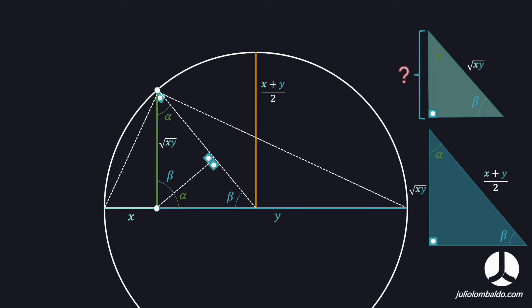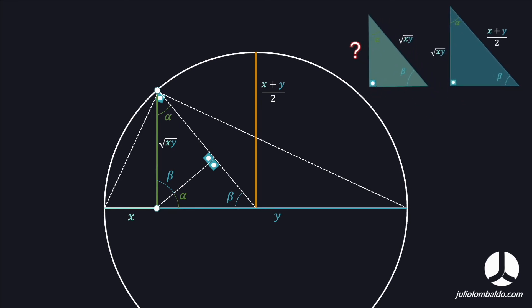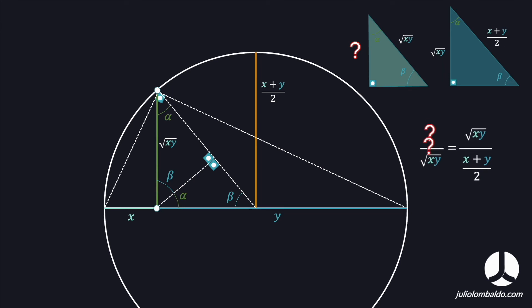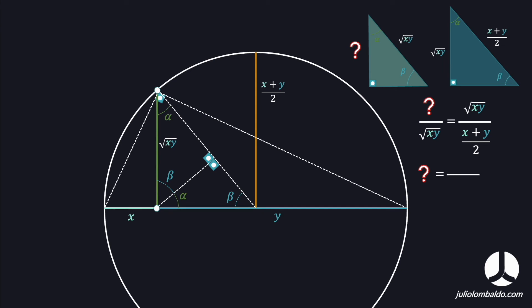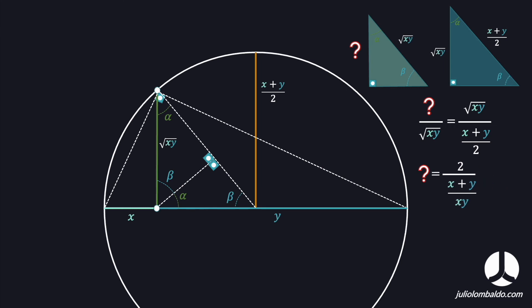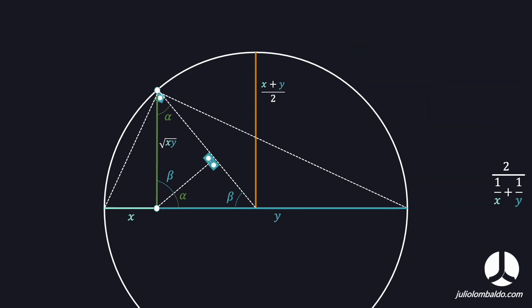There is another measure we need to understand. Comparing all measures of the similar triangles using algebra, we find that this new measure divided by the geometric mean equals the geometric mean divided by the arithmetic mean. Solving this, the new measure equals 2 divided by (1/X plus 1/Y), which is the harmonic mean.